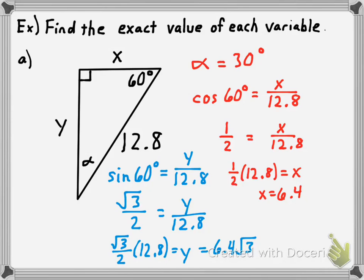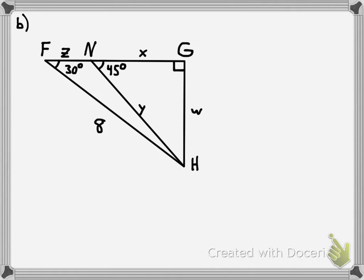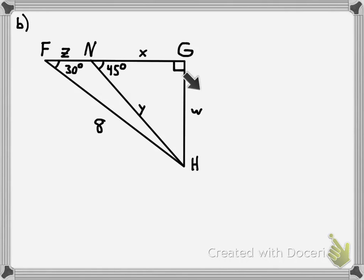One more example — and it's a tough one. I'm going to combine 30-60-90 and 45-45-90 triangles into one picture. There are a couple of different right triangles here. Triangle FGH is a right triangle, and one of its angles is 30, so the whole triangle is a 30-60-90 triangle. Triangle NGH is a right triangle with a 45-degree angle, meaning it's a 45-45-90 triangle. The values we're trying to find are W, X, Y, and Z. I've set it up so you can go alphabetically.